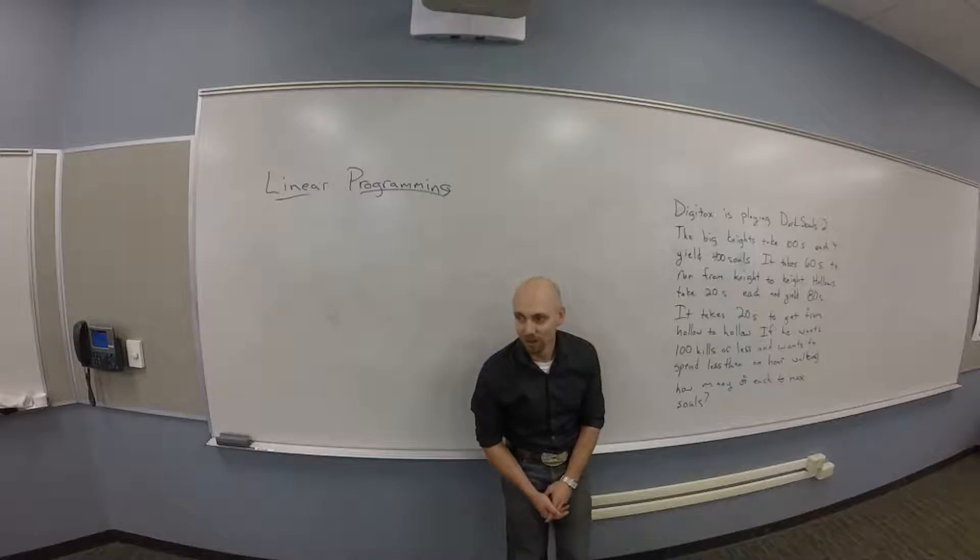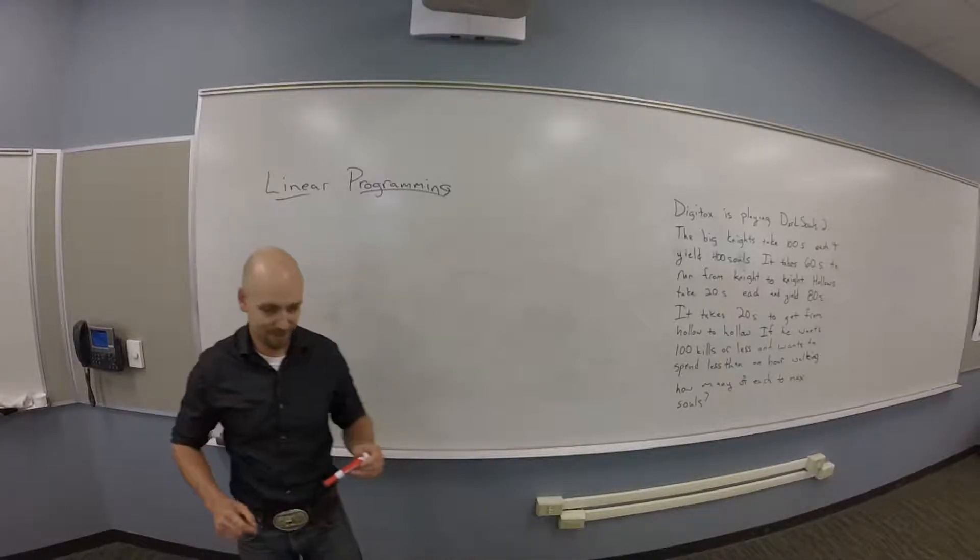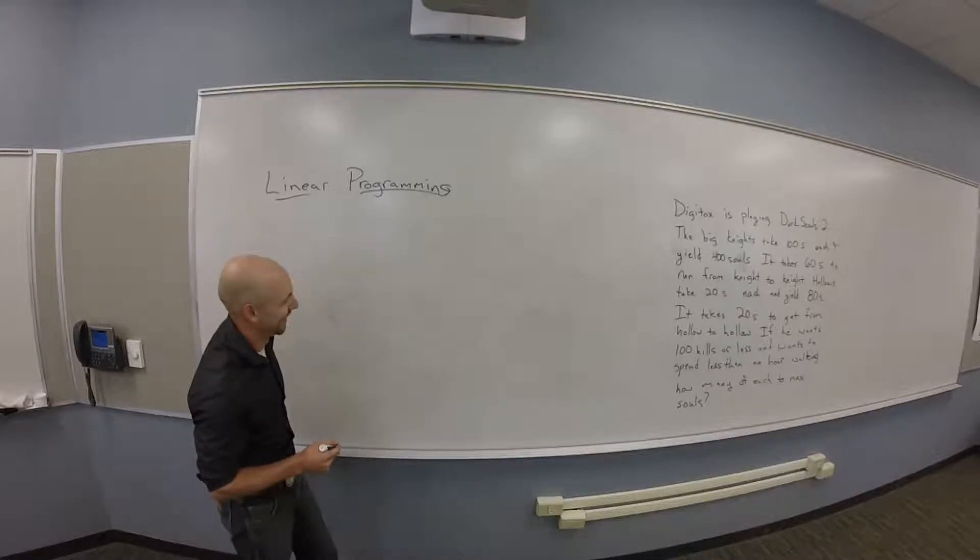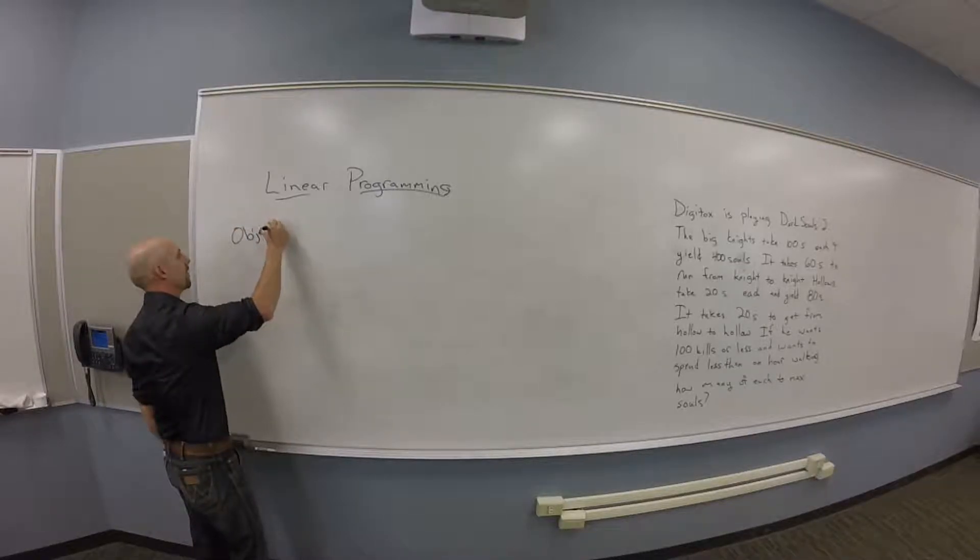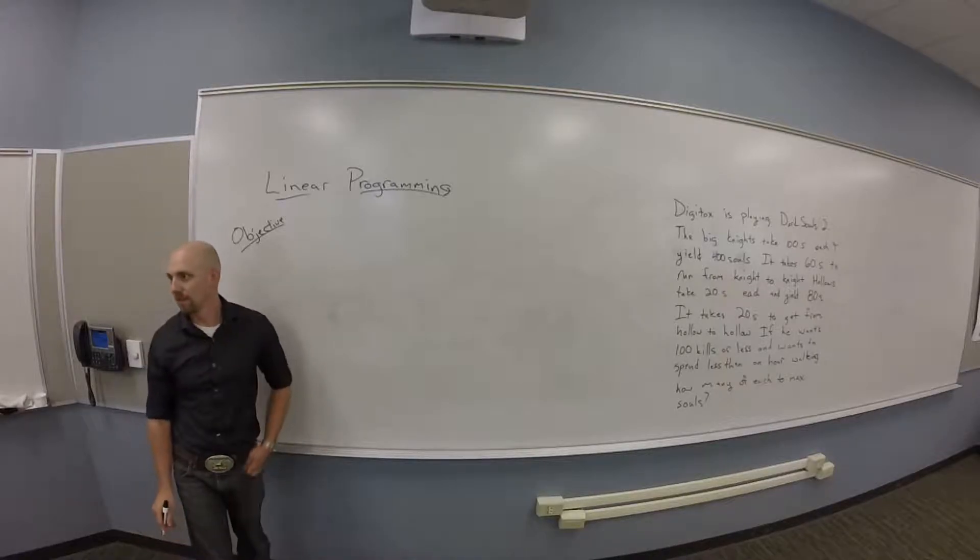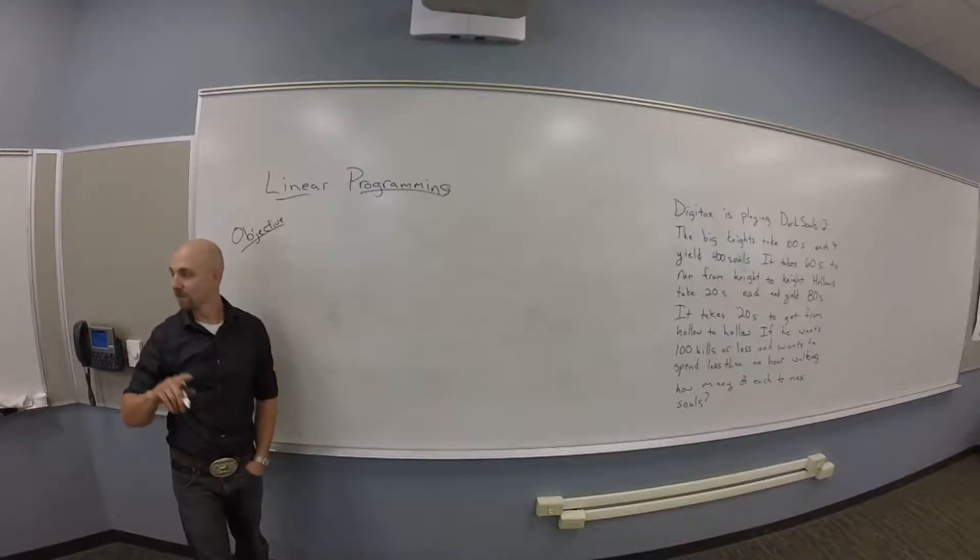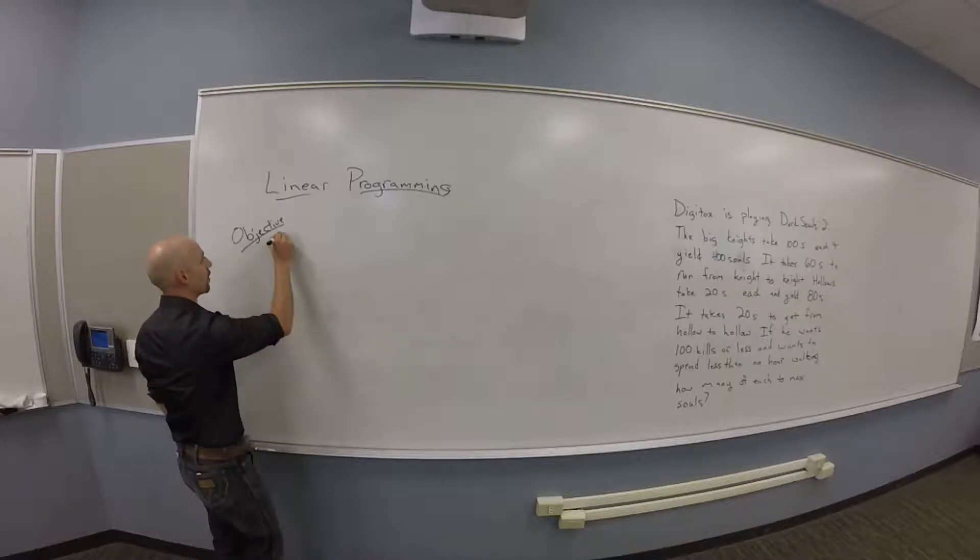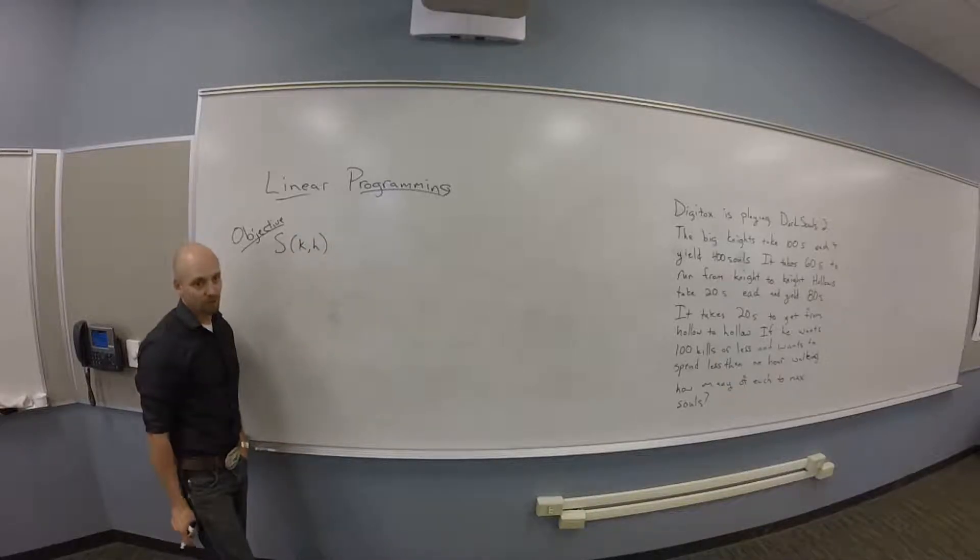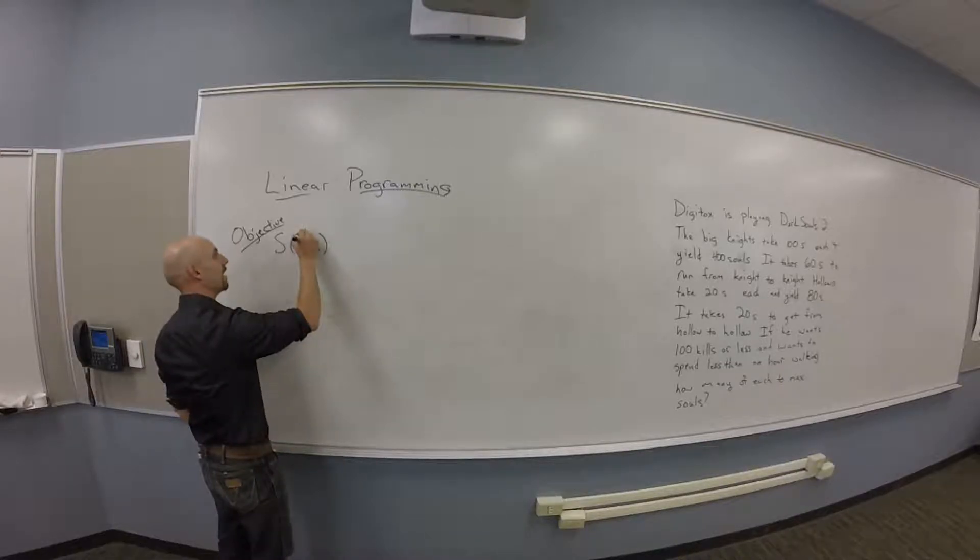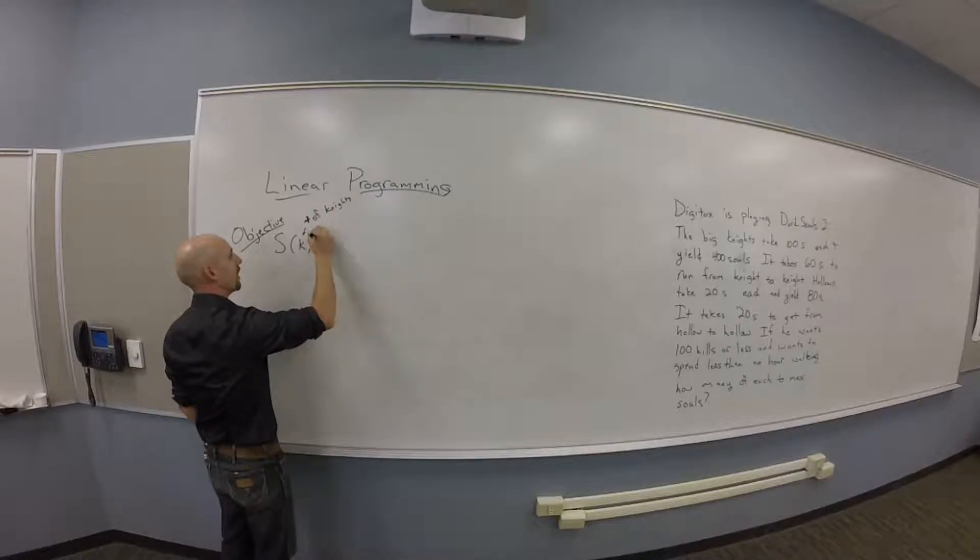What's the thing I want to maximize? What's a function for that and a name for that? What's your objective? You want to maximize souls. So souls is going to be your objective. And you're going to maximize souls as souls are a function of knights and hollows. This K stands for number of knights. And the H stands for number of hollows.